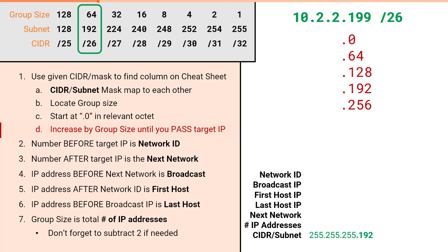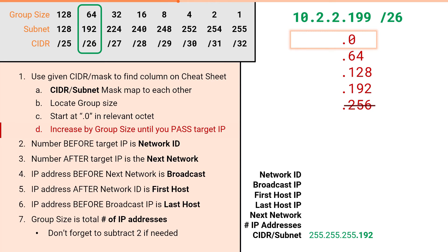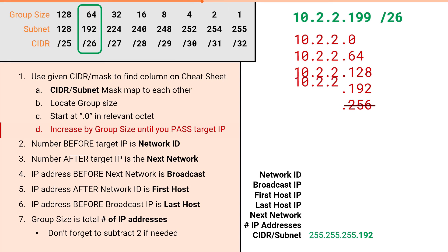But wait — 256 is not a valid IP address. Each octet can only be from 0 to 255. So even though 256 is the next increment, you can't simply write 256. Instead, you have to increase the next octet. You're listing the network IDs for each slash 26 subnetwork: 10.2.2.0, 10.2.2.64, 10.2.2.128, 10.2.2.192. When we would reach 256, we set that octet to .0 and increase the next octet by 1, making the next network 10.2.3.0. We've already passed our target IP of 10.2.2.199, so we stop there.